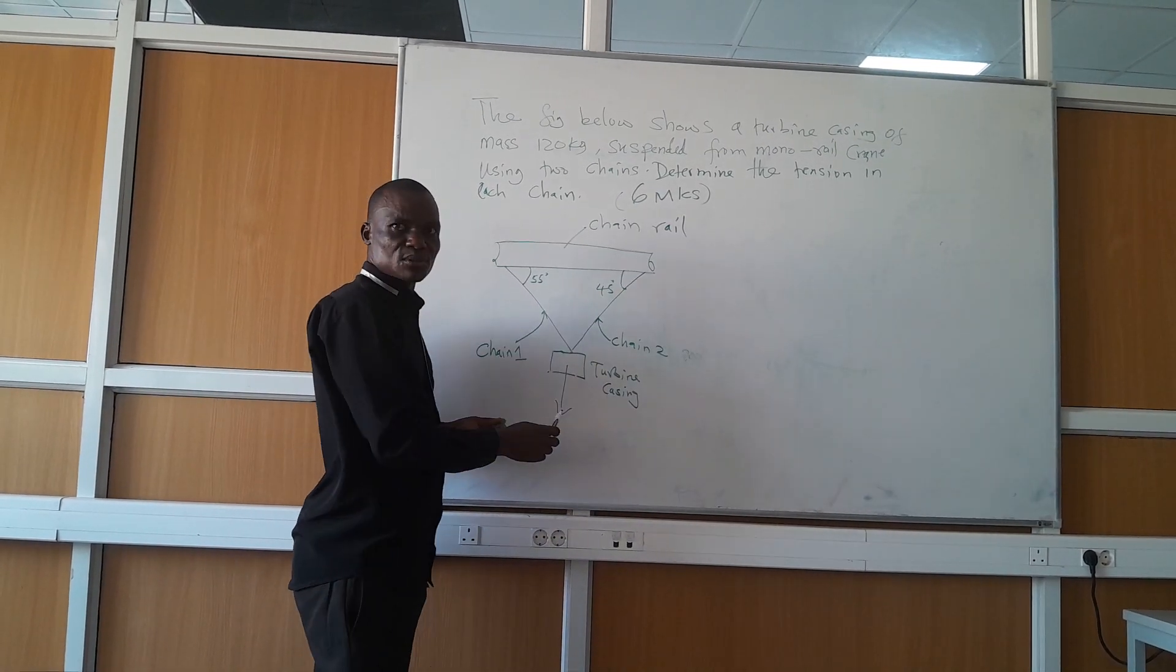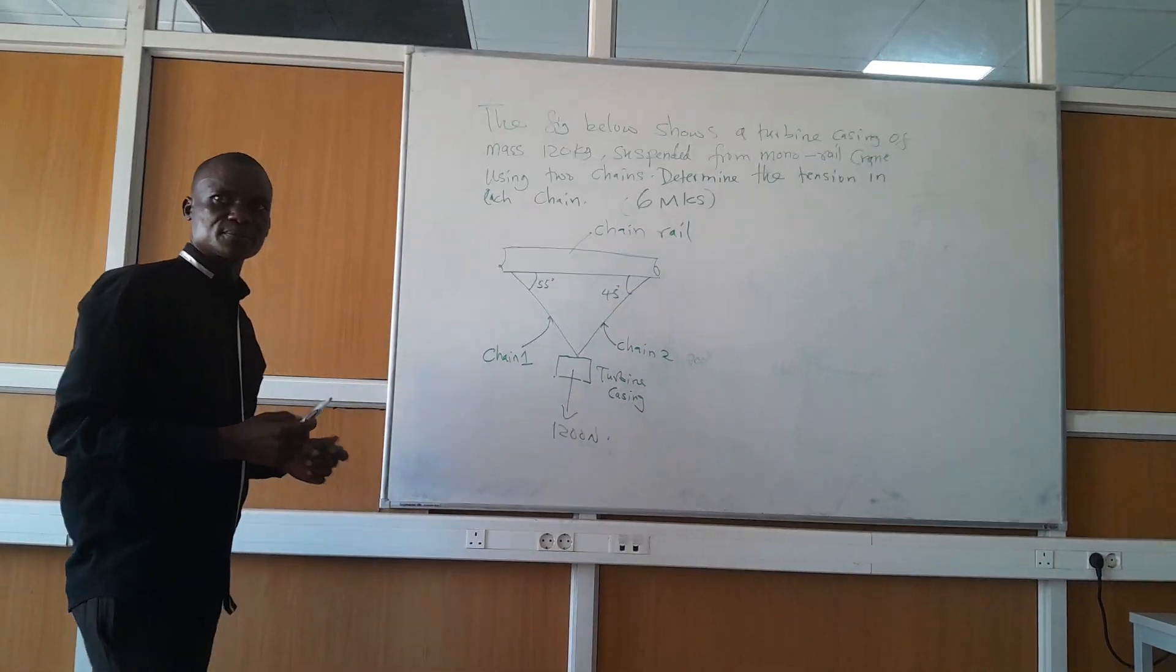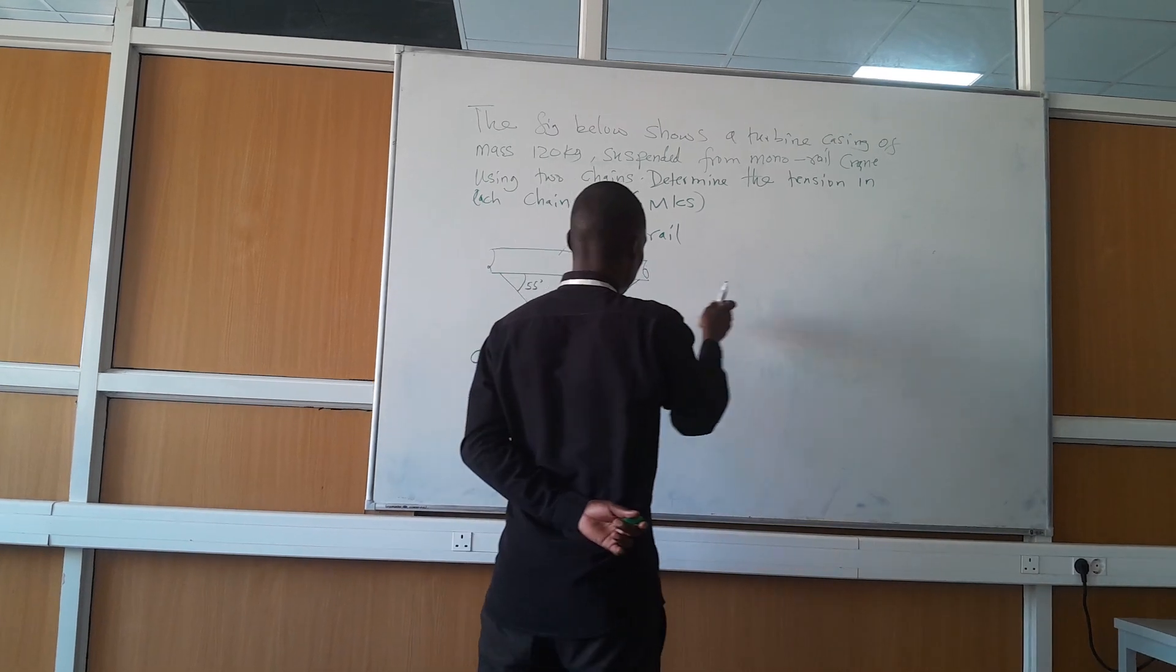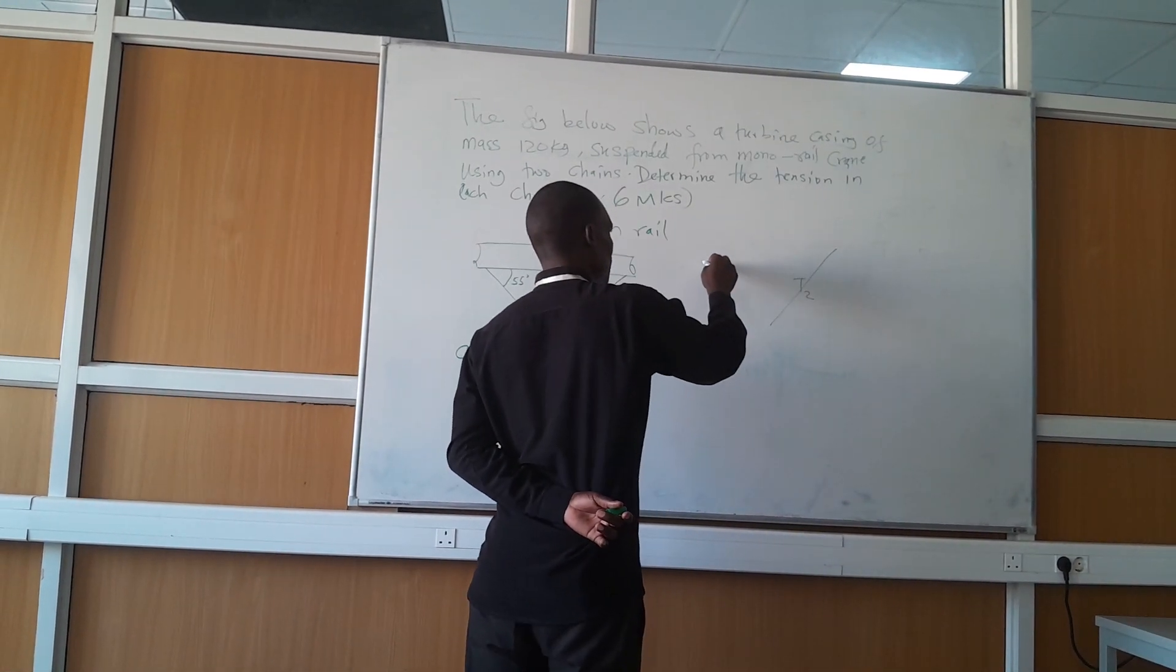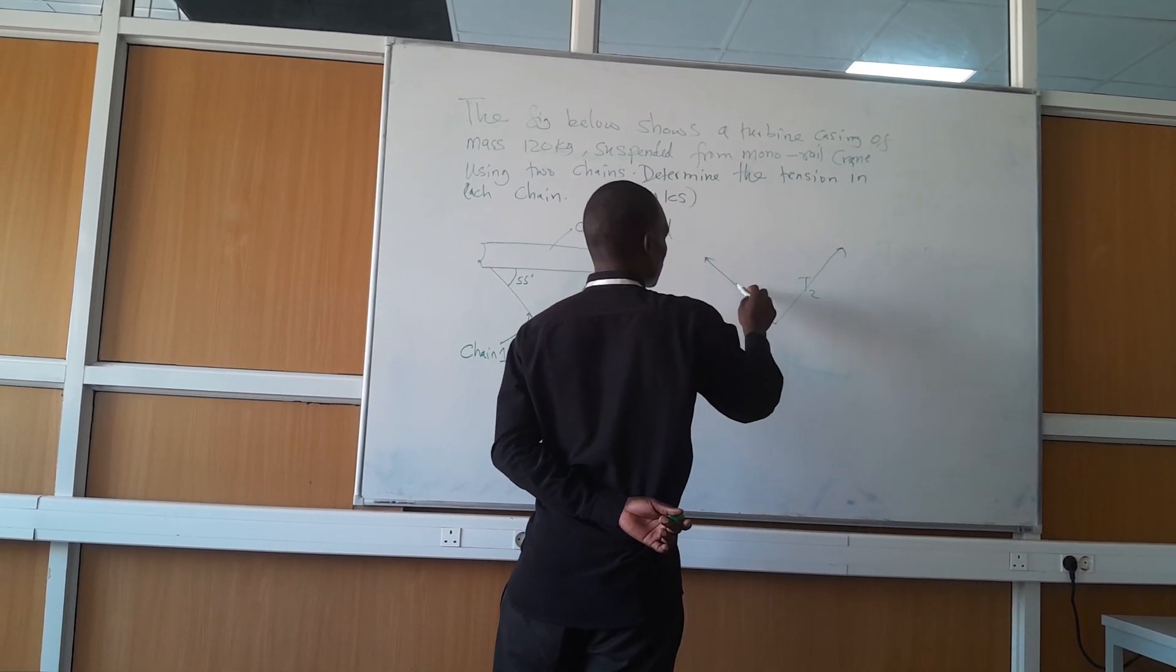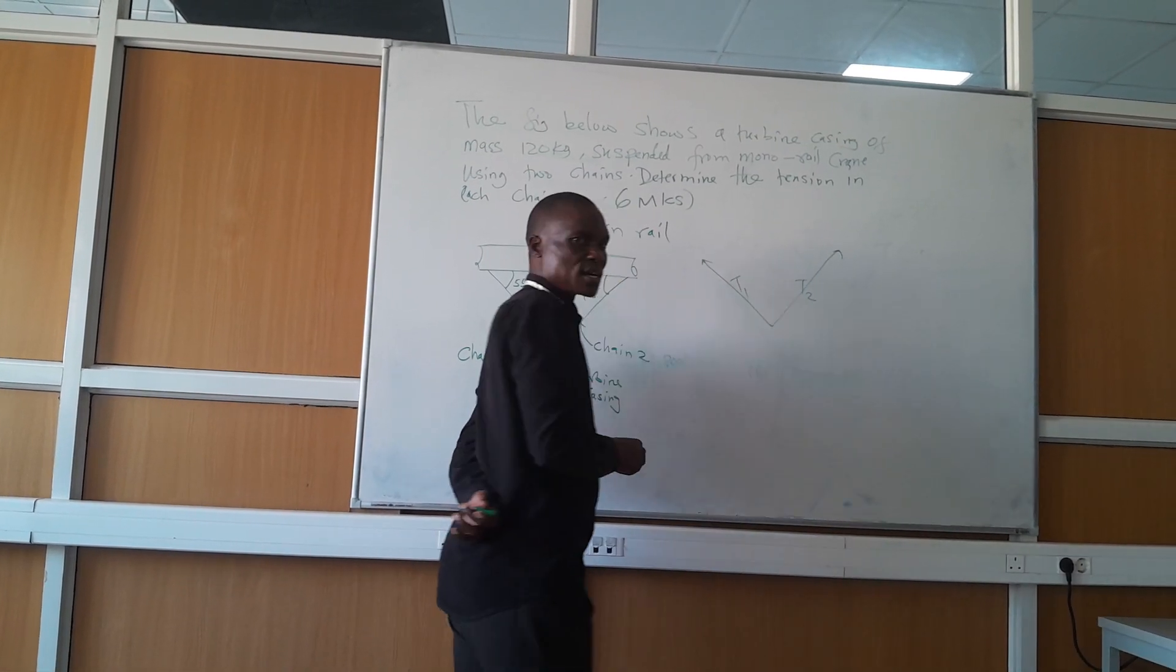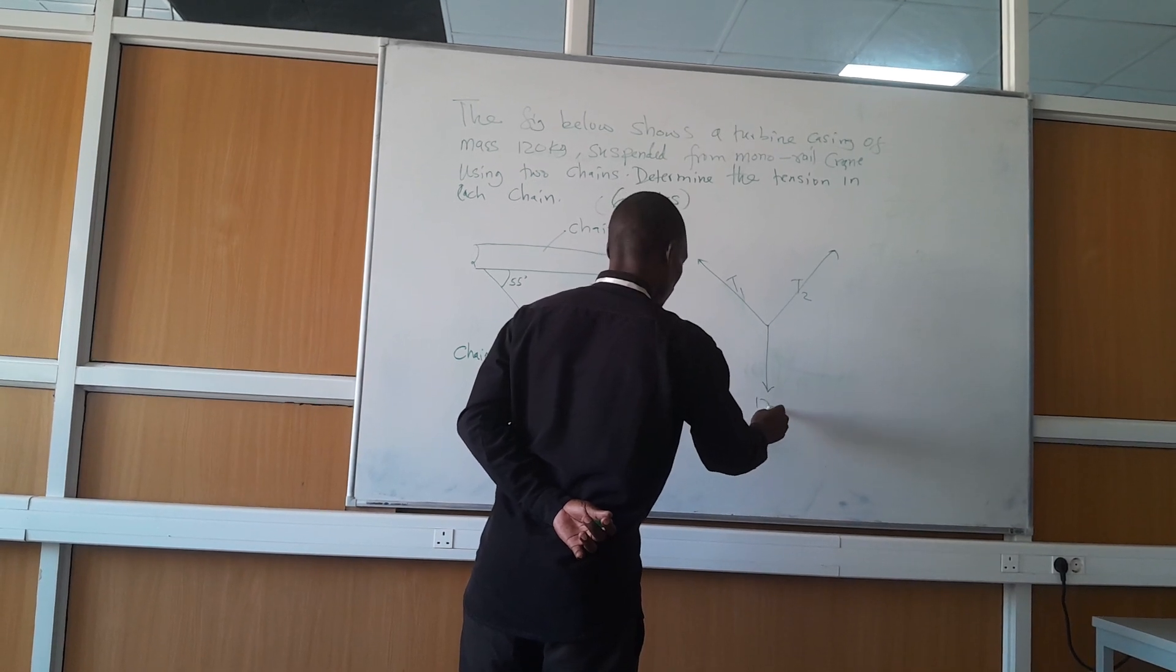That weight is 120 times 10, that is 1200. So let's sketch. There is tension on this chain two, let's say that is tension two, tension on chain one, which is tension one. Then we have weight, which is 1200.